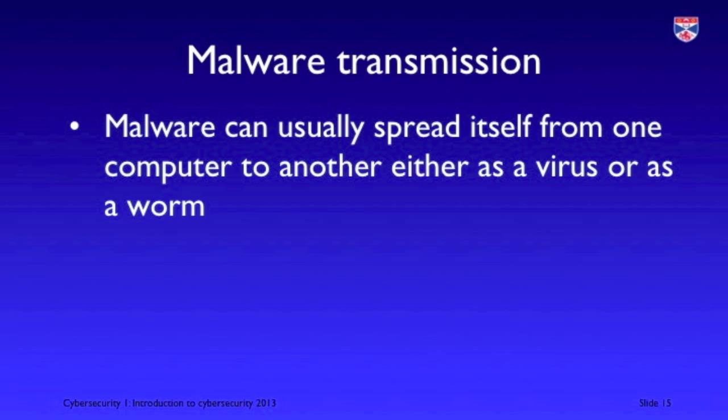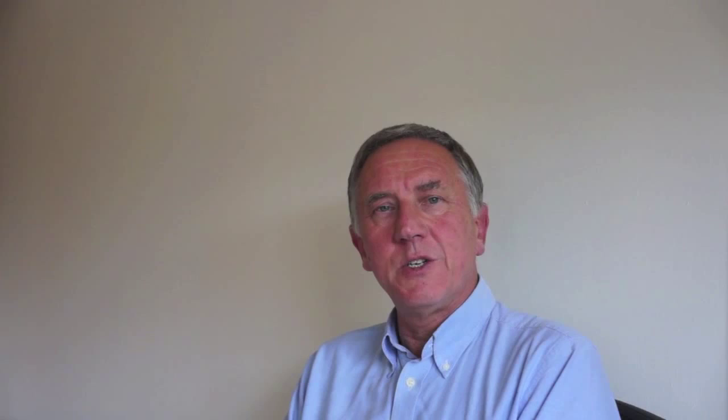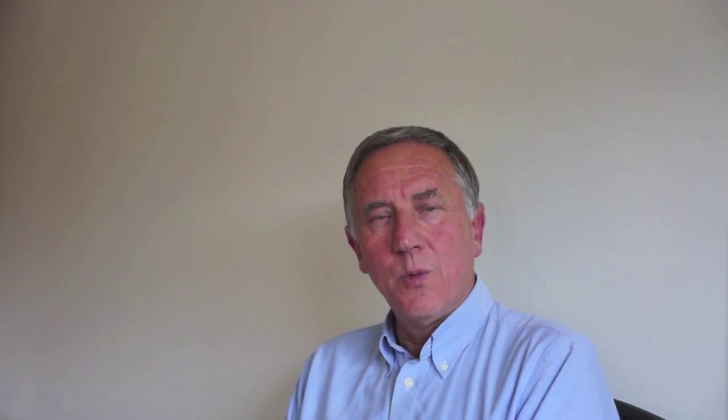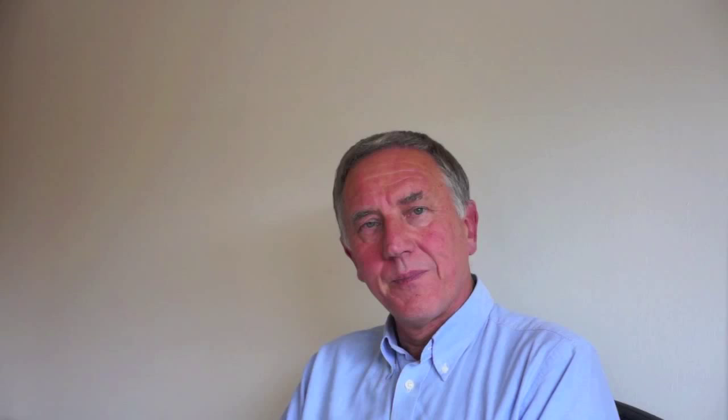Malware that just infected a single machine wouldn't really be that dangerous. What's particularly dangerous is that it can spread from one machine to another, so we can have hundreds or thousands of machines infected. There are two ways malware can spread. There's through the use of a computer virus, which needs a transmission vector — it's attached to something else, and when that thing is transmitted from one machine to another the virus goes with it. It may be attached to an email message or to a document such as a Word document that when opened is copied into the receiver's computer system.